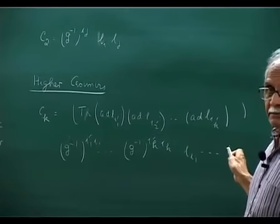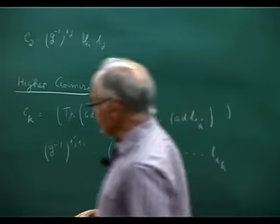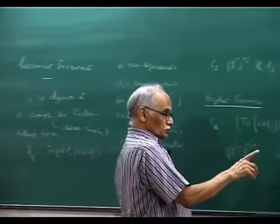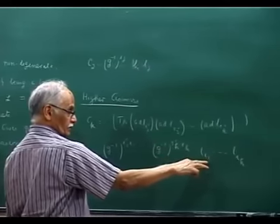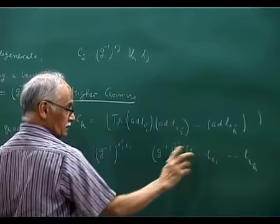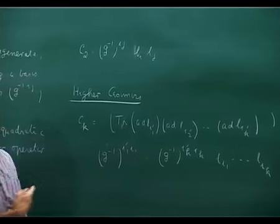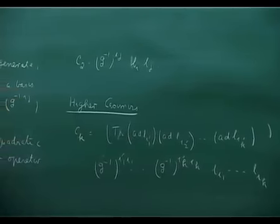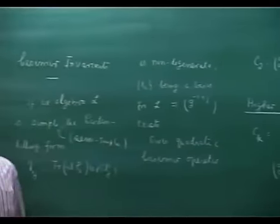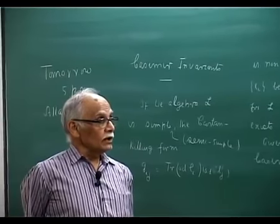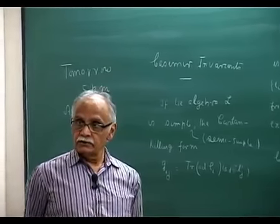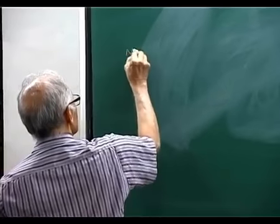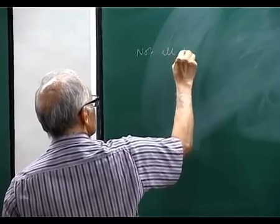These are commuting with all the elements of the Lie algebra for the same reason that C_2 is commuting. When I do a conjugation with the element of the group, it rotates this, but G inverse transfers it to the rotation to the primed indices. The trace will take care of it, the trace will remove it. These are the higher Casimirs, but not all of them are independent.